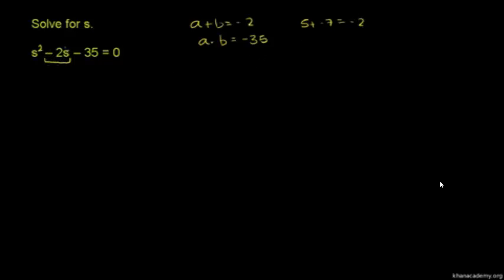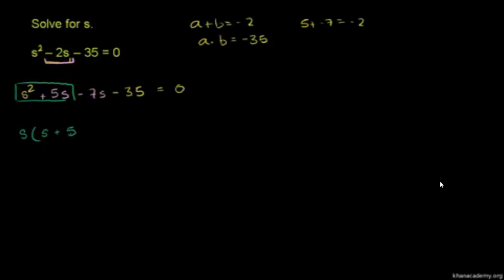To factor by grouping, we split the middle term. We have s squared, and then the middle term I can write as plus 5s minus 7s, and then we have the minus 35, and of course all of that is equal to 0. We call it factoring by grouping because we group the terms. These first two terms have a common factor of s, so we factor that out: s times s plus 5. In these second two terms, we have a common factor of negative 7, so we factor that out: negative 7 times s plus 5.